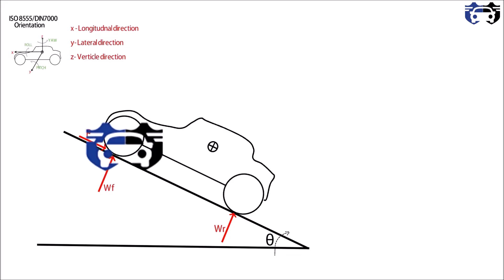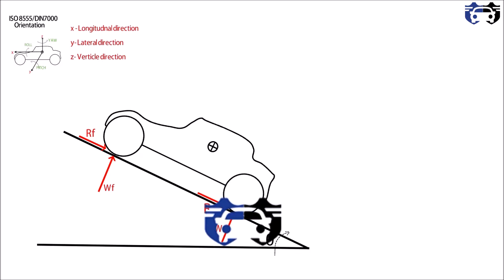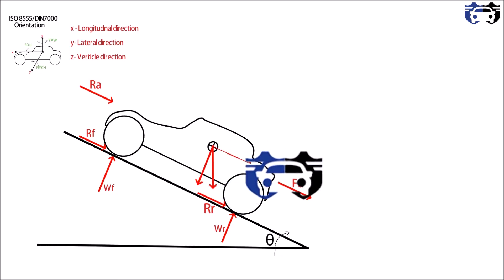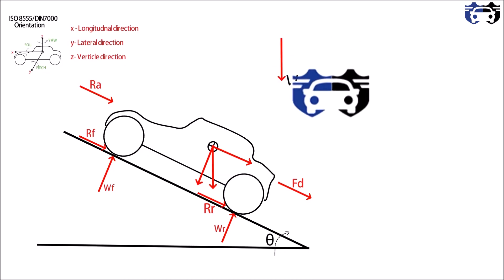On the front tire there is front rolling resistance Rf, and on the rear tire the rear rolling resistance Rr. Another force is Ra, which is the aerodynamic force. One more force is Fd — this is the dragging or pulling force, acting if the car is pulling some trailer or a cart.